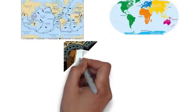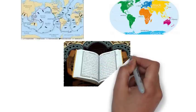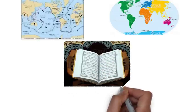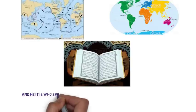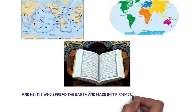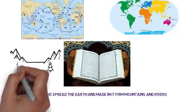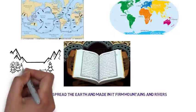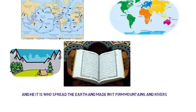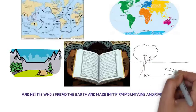This scientific discovery was described in the Holy Quran by Allah Almighty more than 1400 years ago. Chapter 13, Verse 3: 'And He it is who spread the earth and made in it firm mountains and rivers.' In this verse, the expression 'who spread the earth' coincides precisely with the Continental Drift Theory. Furthermore, as the verse refers to mountains and rivers, the word 'earth' refers to the land surfaces — continents.